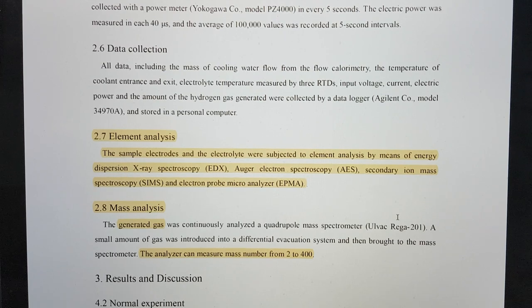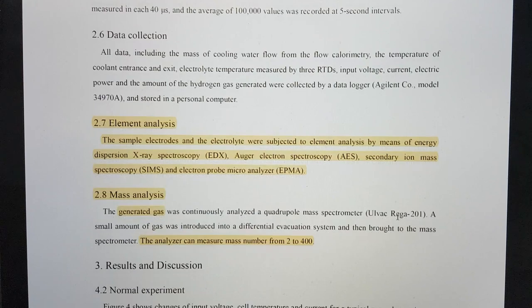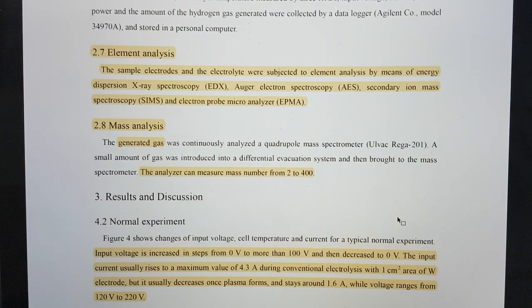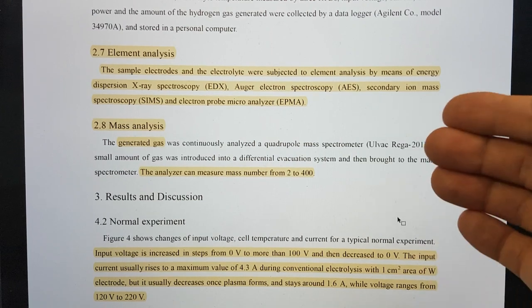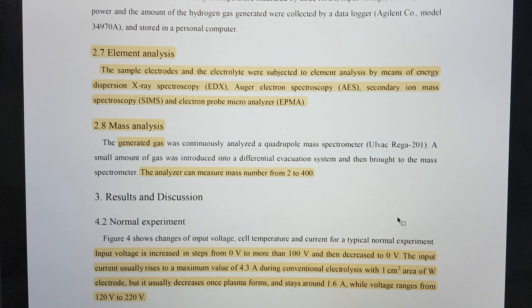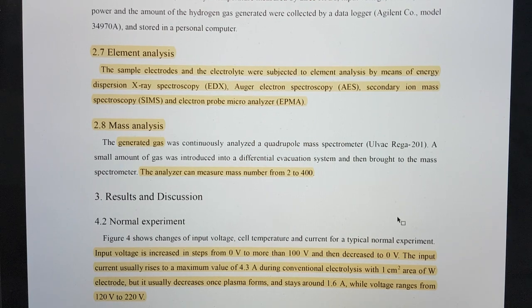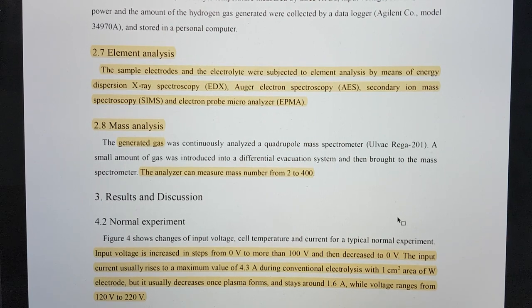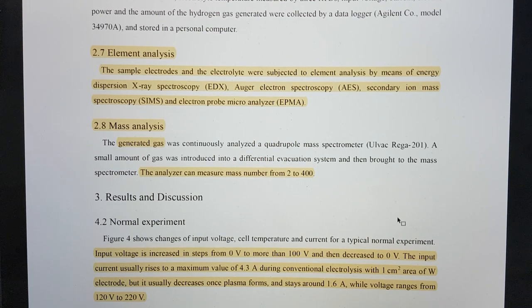Element analysis: The sample electrodes and electrolyte were subject to energy dispersion x-ray spectroscopy (EDX), Auger electron spectroscopy (AES), secondary ion mass spectroscopy (SIMS), and electron probe micro analyzer. They really used a wide range of techniques to look at the data. It's a shame we don't have the SIMS data because that should give us isotopes. Mass analysis: The generated gas was continuously analyzed by a quadrupole mass spectrometer. It would have been useful to have that data. The analyzer can measure mass numbers from 2 to 400. There should have been significant gas generated and it would have been useful to see those.